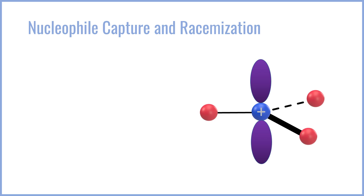I want to talk a little bit now about the stereochemical outcomes of the SN1 reaction because they're a bit different from SN2. As we noted, the SN1 reaction goes through a planar open cation intermediate. Because of this, the planar cation has two symmetric faces — the p-orbitals are identical on both sides, and there is no steric effect preferentially from one side or the other because of the trigonal planar geometry.